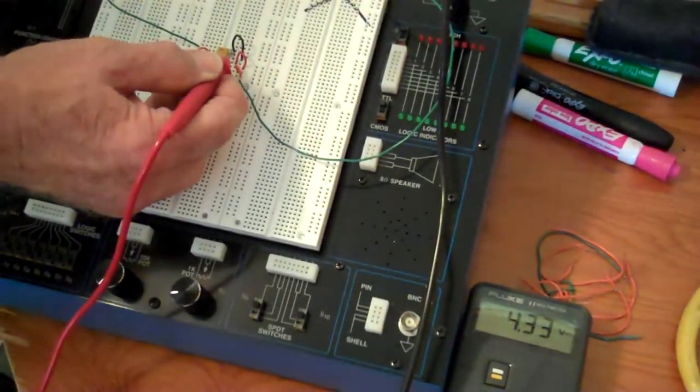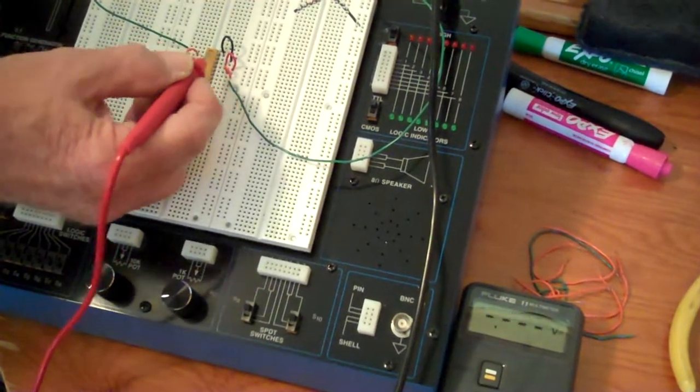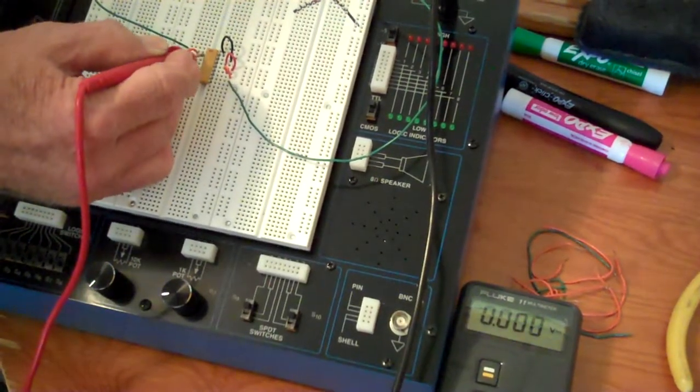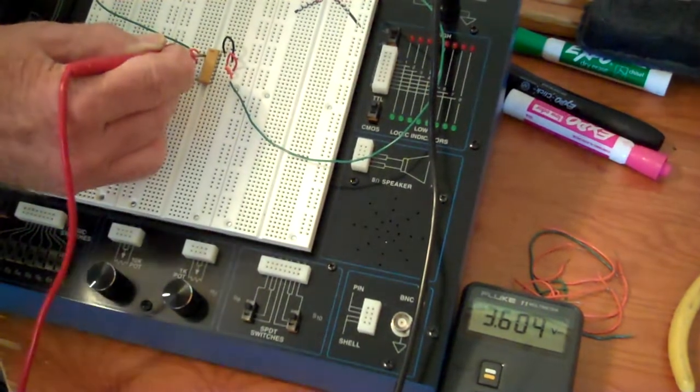As I go to the other side of the resistor, it drops to 4.33. I'm going to go to the next segment down, and there's 3.6 volts.